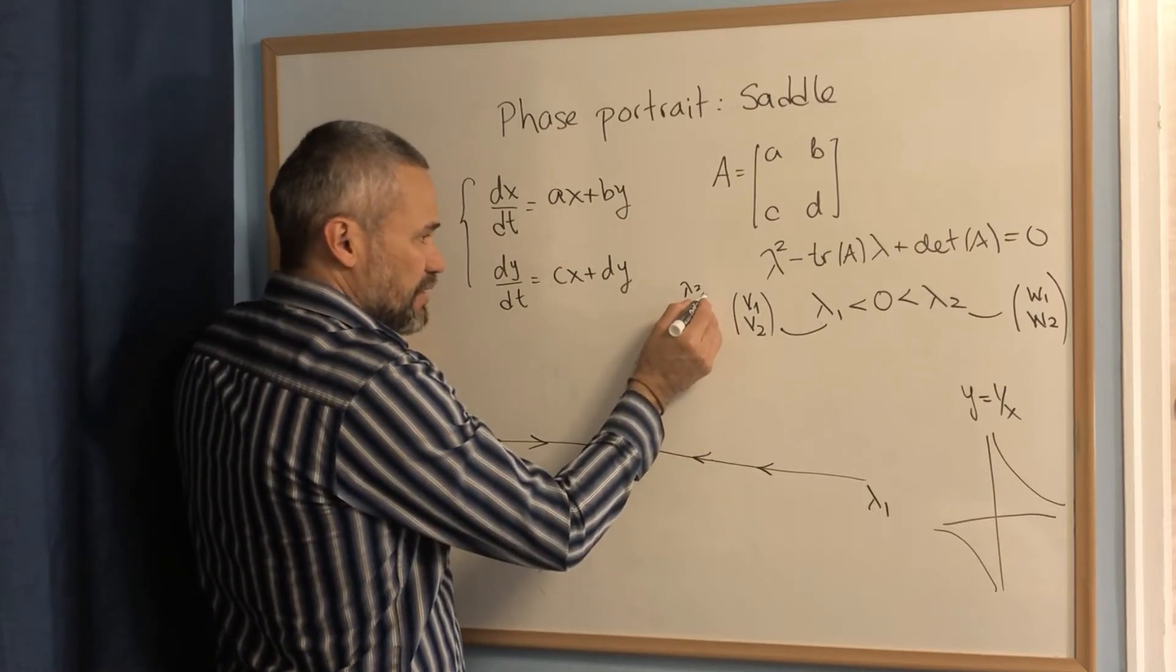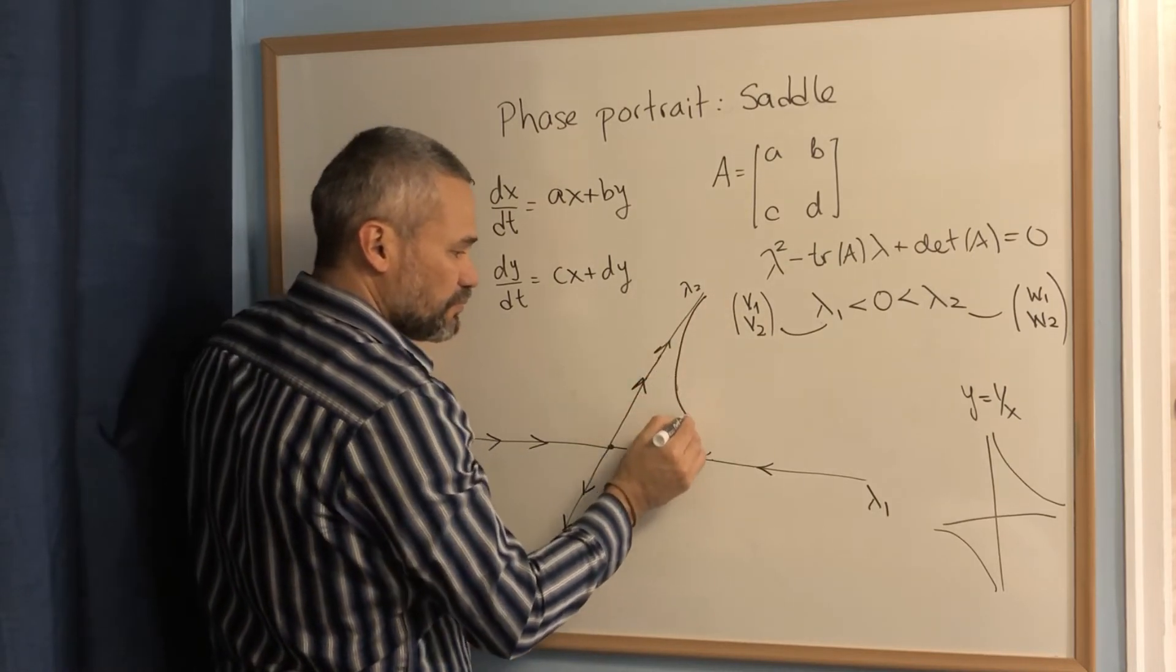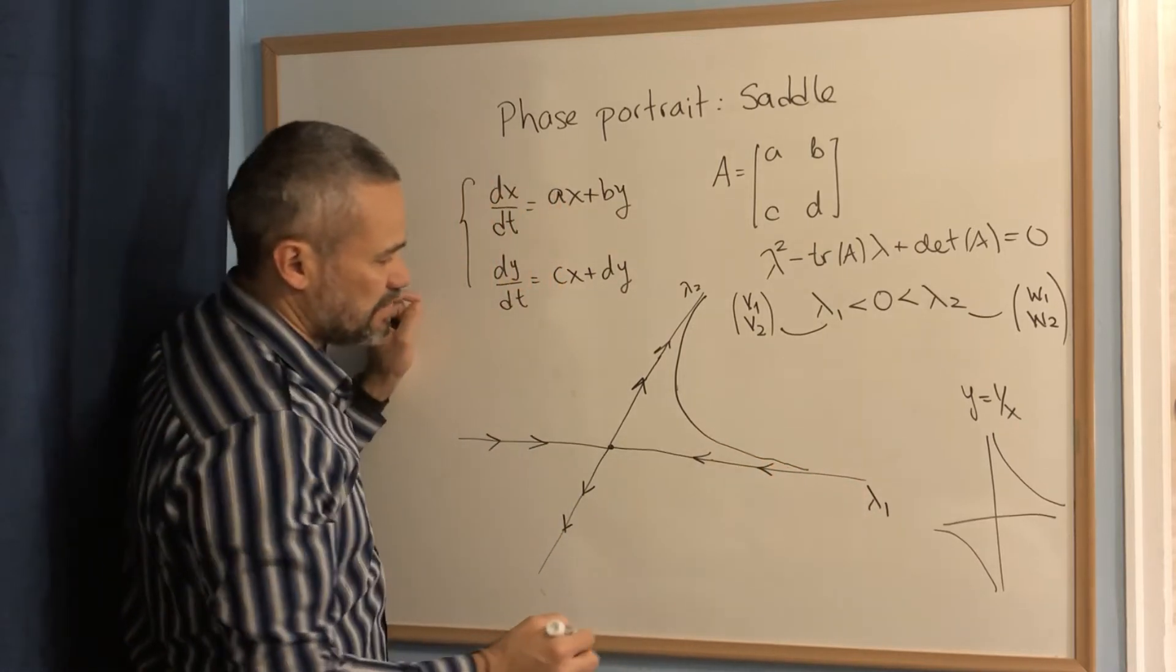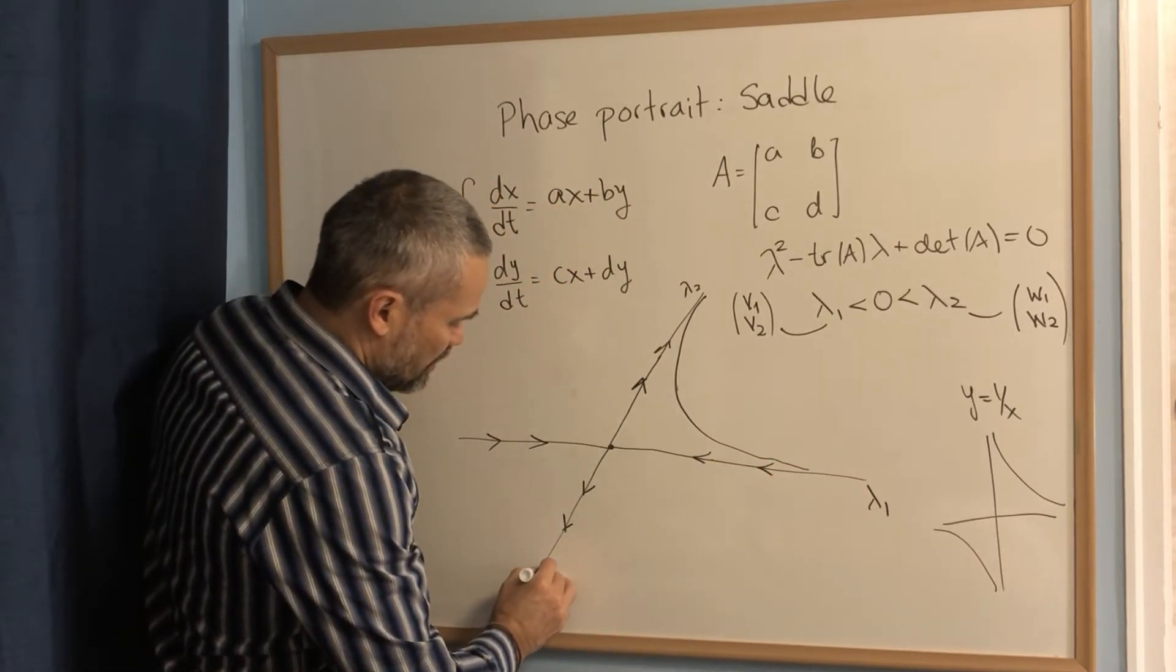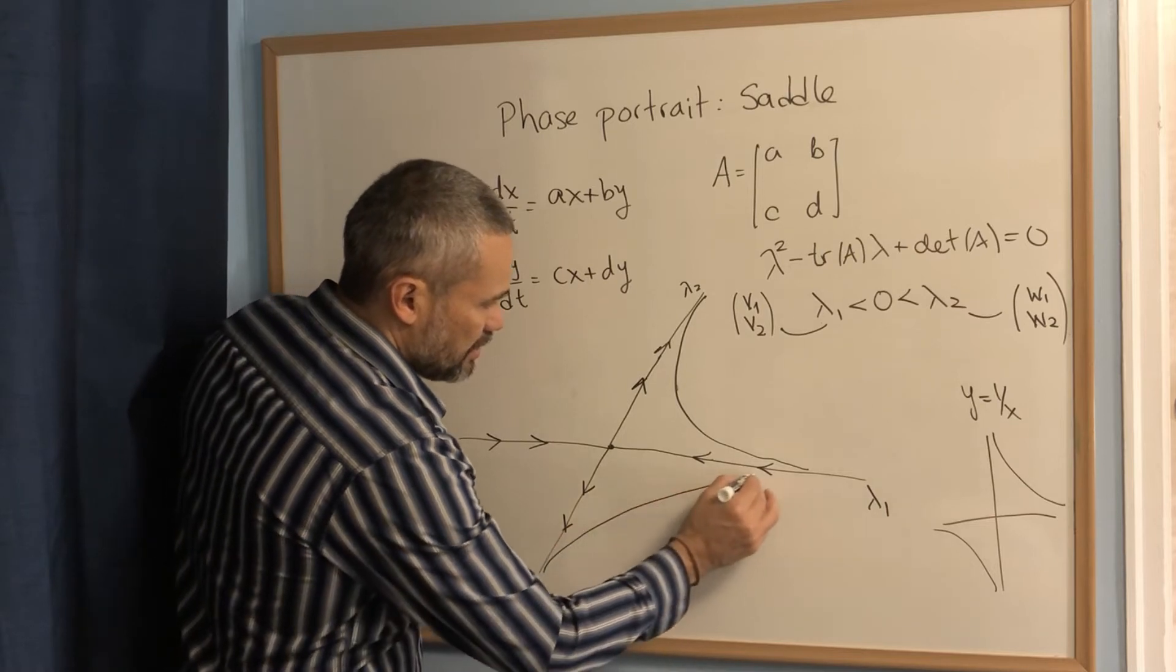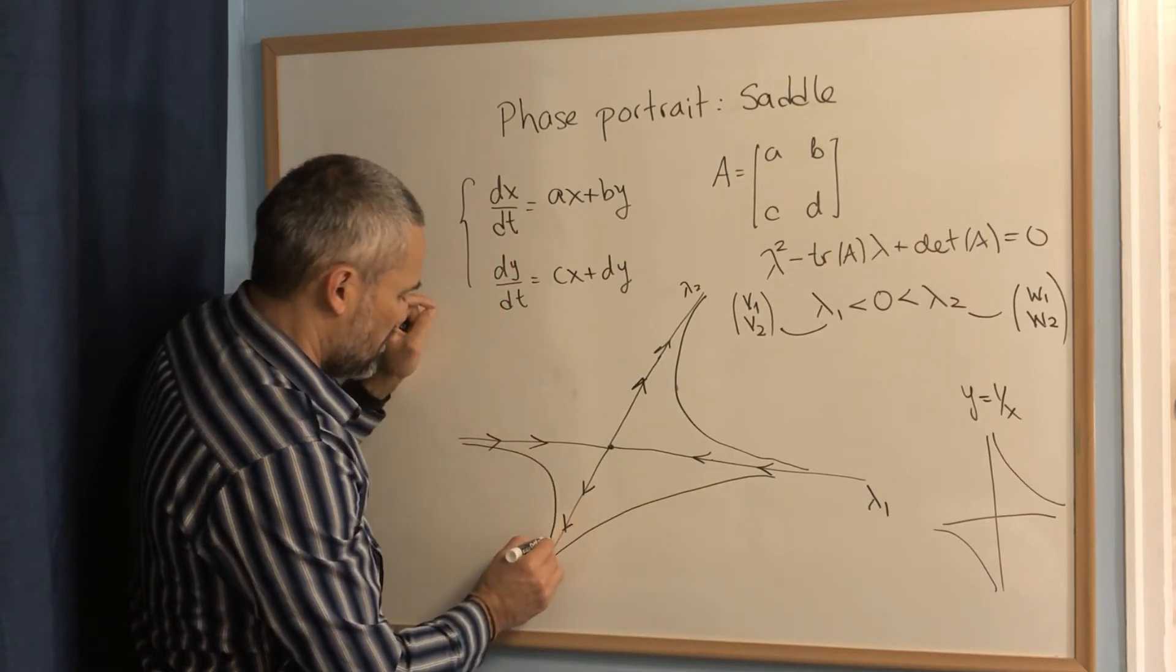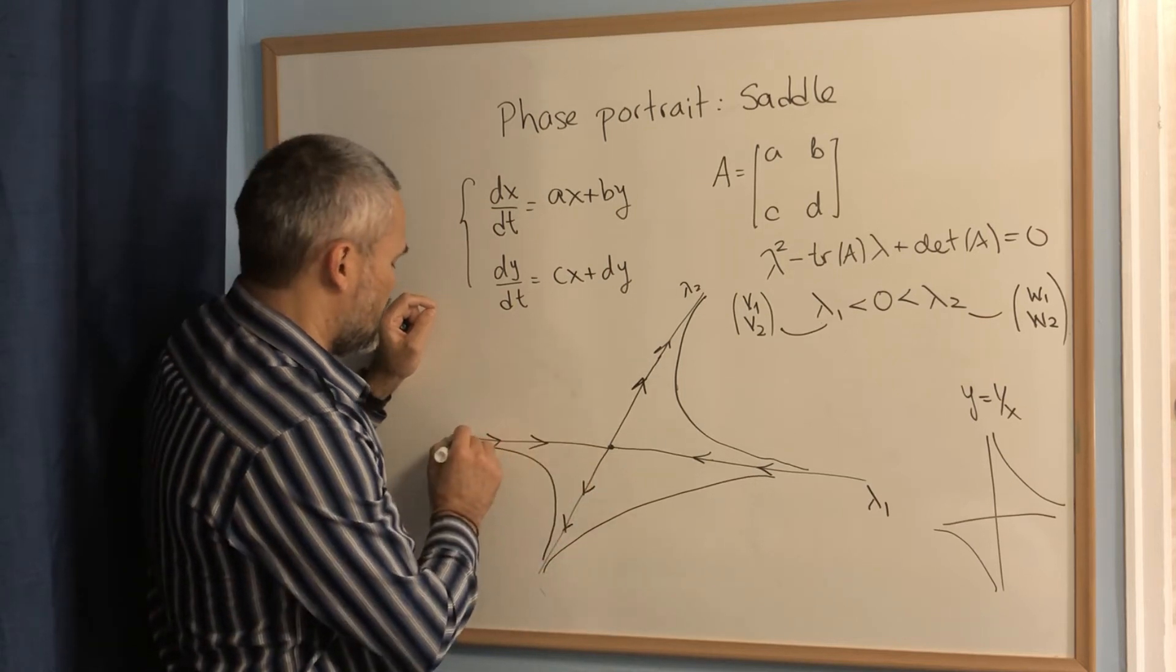Then we draw something like this. This is going to keep approaching that semiline. And we do something like here, like this. And we do something like this. And we do something like this.